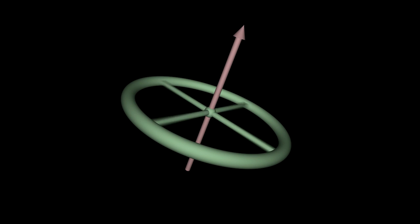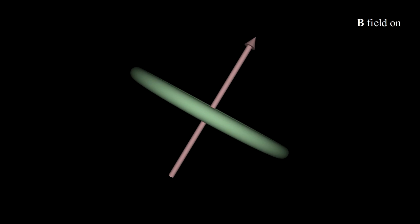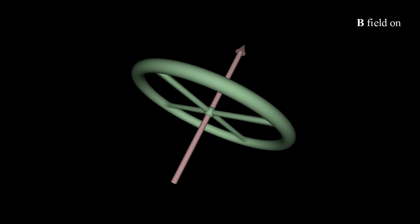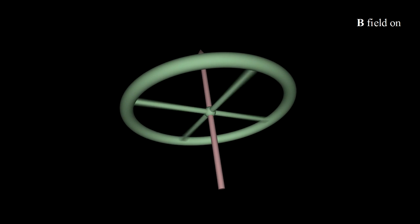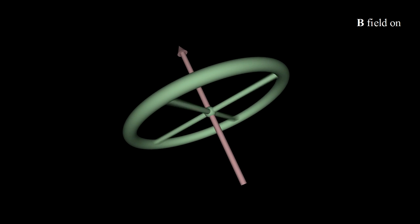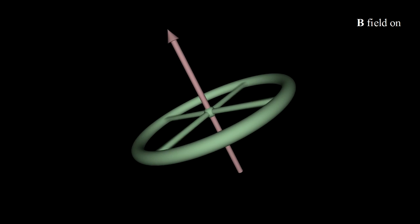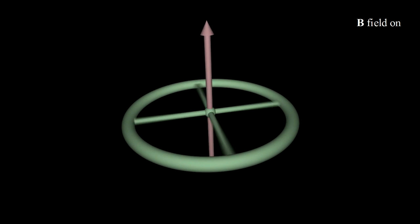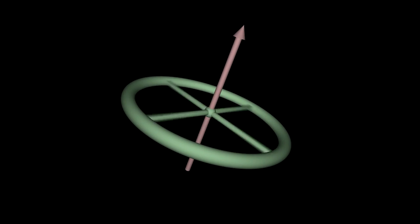Imagine our electron orbit as a spinning bicycle wheel. The magnetic field wants to make the axle point downward. But instead of doing this, the axle will undergo precession. Turning off the field gets rid of the twist and stops the precession.